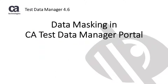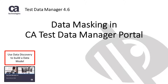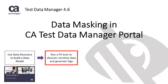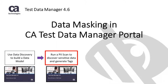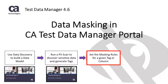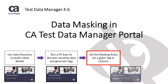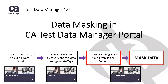The data masking process is split into three videos: using the data discovery process to create a data model; scanning that data model for personally identifiable information, or PII, and tagging it accordingly; and finally, defining masking rules for columns containing PII and running the masking job. You need to complete all these steps to mask data in the Test Data Manager portal.